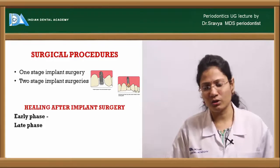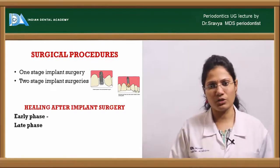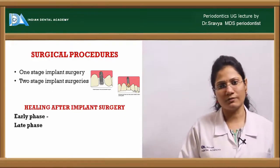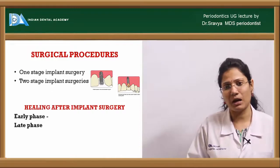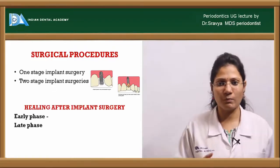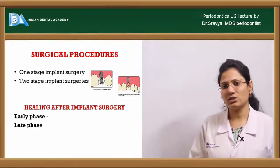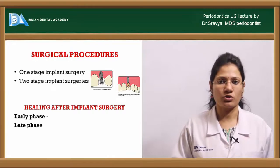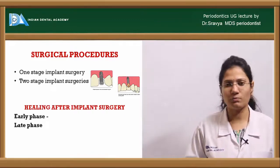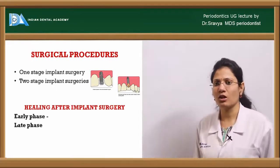Surgical procedures employed include a one-stage or a two-stage implant procedure. In a two-stage procedure, the first surgical stage involves placing the implant into the bone, followed by a healing period of three to four months for the mandible and four to six months for the maxilla, after which the prosthesis is loaded. In a one-stage procedure, the implant and abutment are placed in a single visit, completing the entire procedure in one stage.